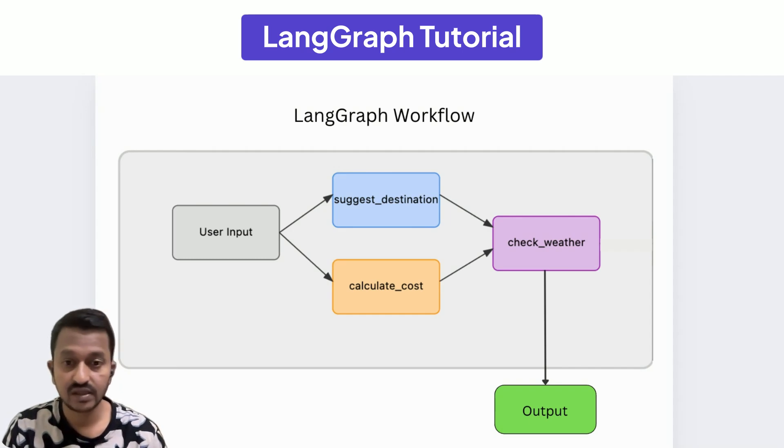As you can see, this is how the user flow goes within the LangGraph. It first suggests the destination and checks the weather and also calculates the cost to go there. And then it will give him some suggestions where he can go. We will see this practically through a simple tutorial now.